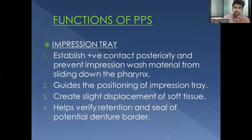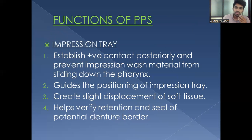The functions of the posterior palatal seal area include: with the impression tray, it establishes positive contact posteriorly, prevents impression wash material from sliding down the fauces, and guides the positioning of the impression tray. It also creates slight displacement of soft tissue and helps verify retention and seal of the posterior denture border during secondary impression and border molding.